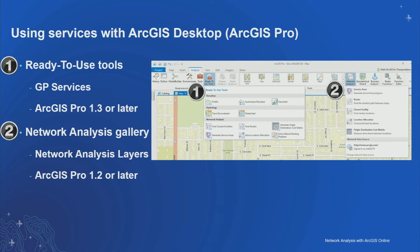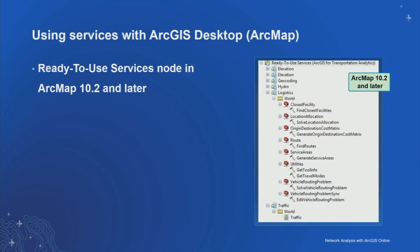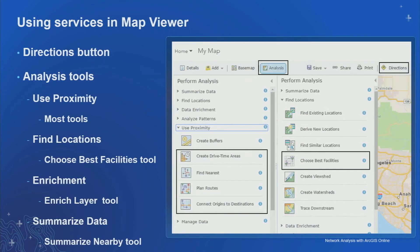In ArcGIS Pro, you can access these services two ways — via ready-to-use tools as geoprocessing services, or via the Network Analysis gallery within the analysis ribbon. In ArcMap, you connect to your ArcGIS Online organization and within ready-to-use tools you'll see these services available. In Map Viewer, which is the browser-based application at ArcGIS.com, there is a Directions button which uses the routing service, and analysis tools under Use Proximity and other toolsets.